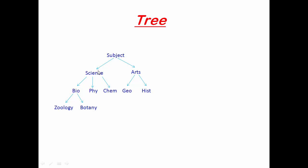Subjects divided into two categories: Science and Arts. Then Science has three branches: Biology, Physics, and Chemistry. Arts has two branches: Geography and History. Biology further divided into two branches: Zoology and Botany.